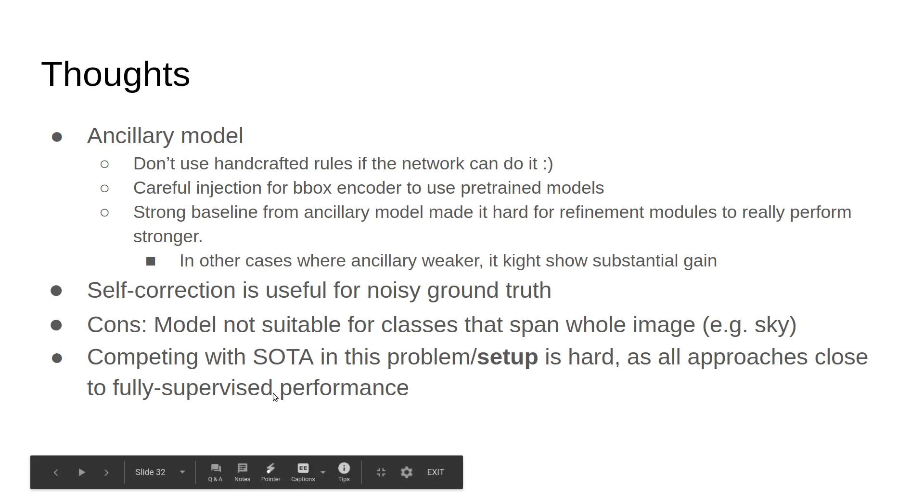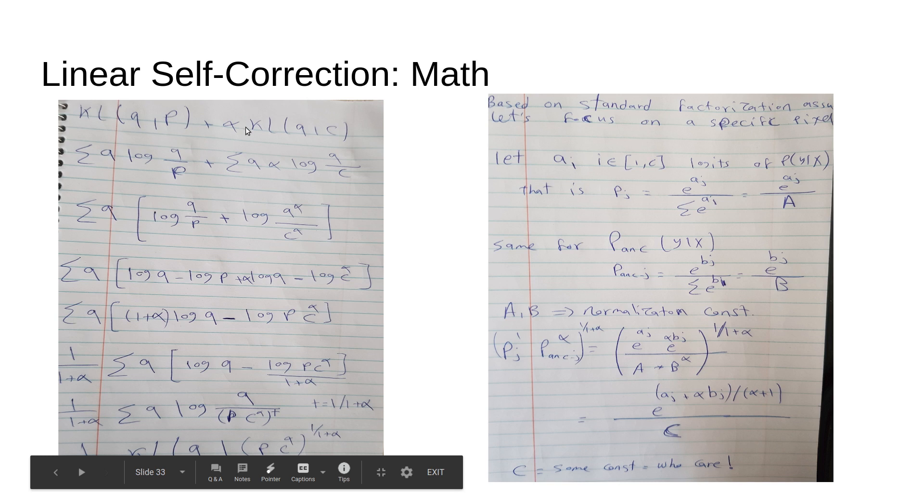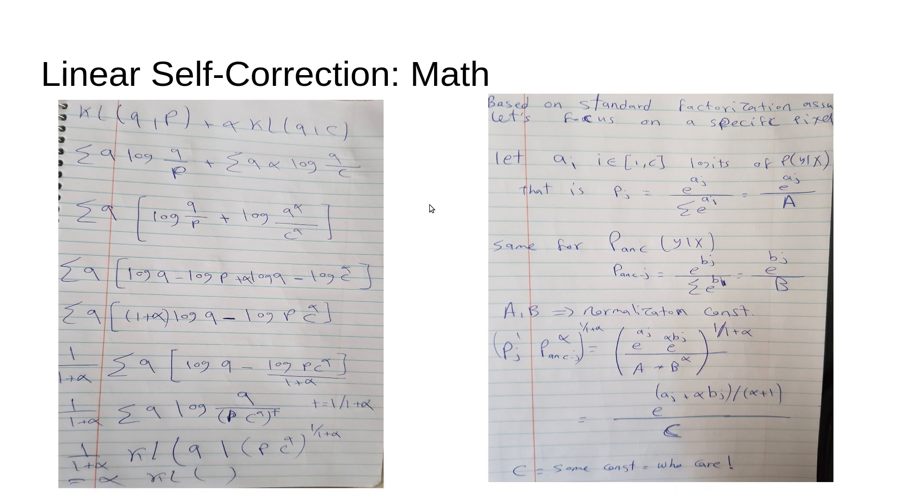One limitation clearly in our work is that it doesn't work for classes that span the whole image, like sky. The approach will not work well in such cases. Finally, you'll notice that the state-of-the-art in this problem is very high, very close to fully supervised performance, which makes this setup very hard to compete more with. I think we made it harder for people. Here you'll find some of my personal derivation I wrote recently for how to merge the KL divergences and how to merge the logits. They're easy math, just in case you'd like to try it yourself. Thank you.